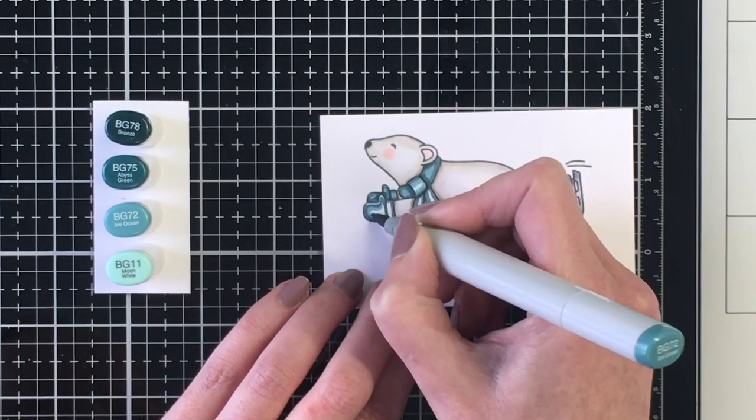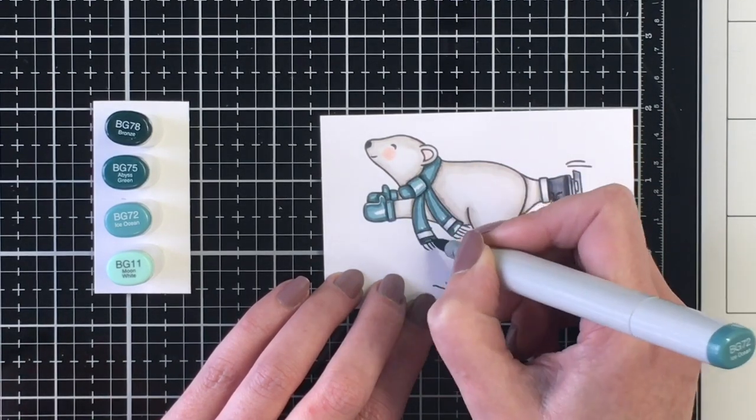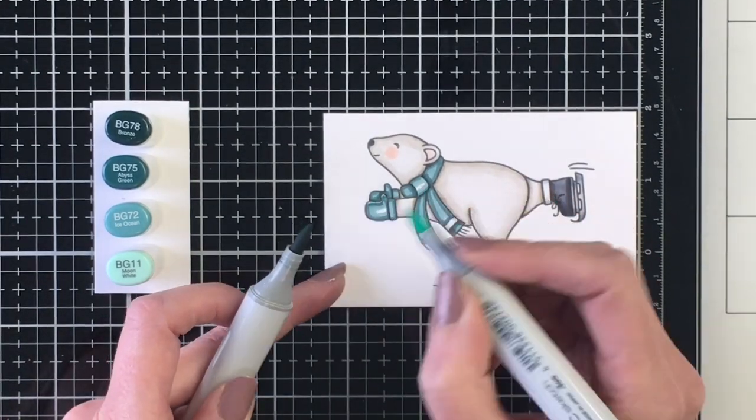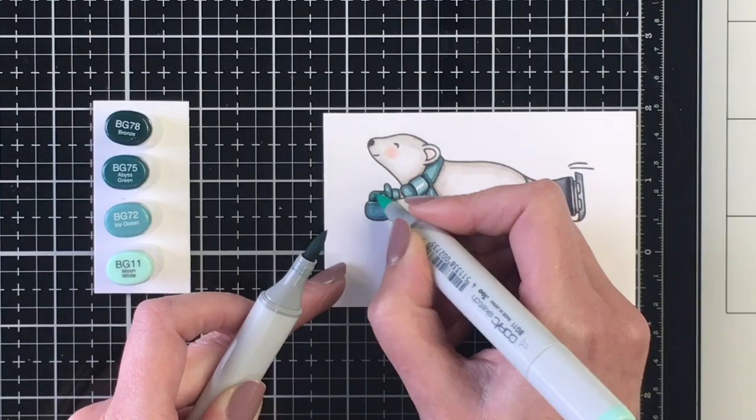So nothing too fancy here. Just going through, again, darkest to lightest. I am going to add some detail to the scarf just to kick it up a notch. And I'll do that with my white gel pen here in a second.